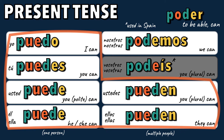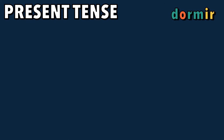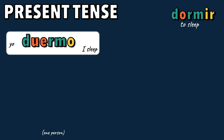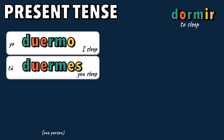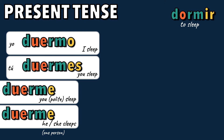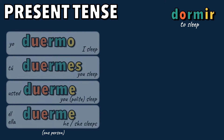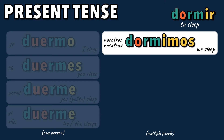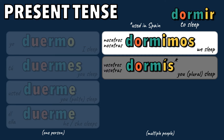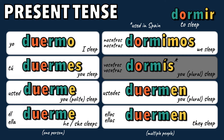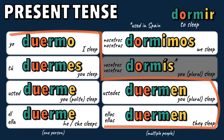Now, let's see how the verb changes to say different people sleep. Duermo, duermes, duerme, dormimos, dormís, duermen. Notice the O only changes to UE in these forms.